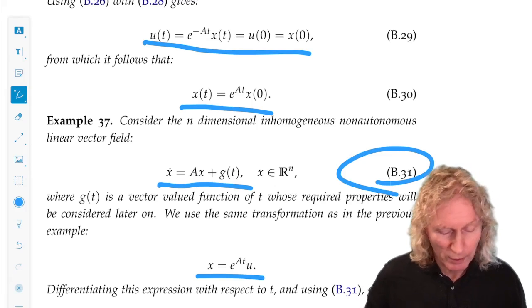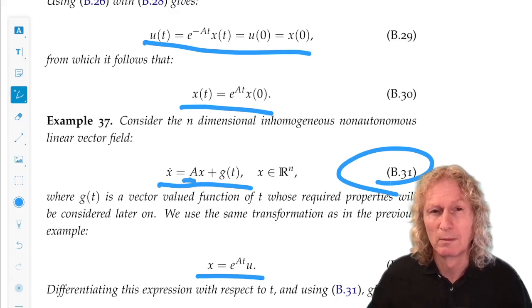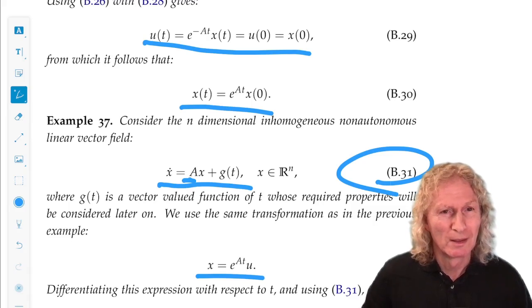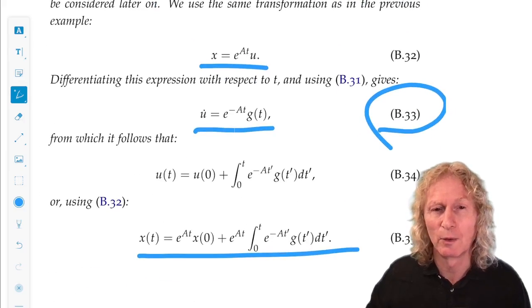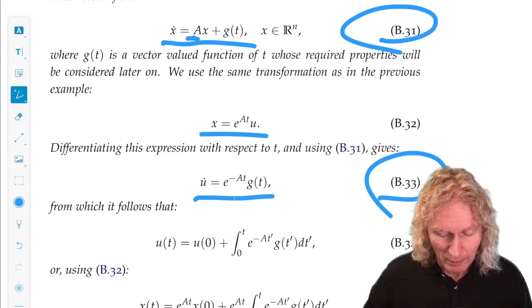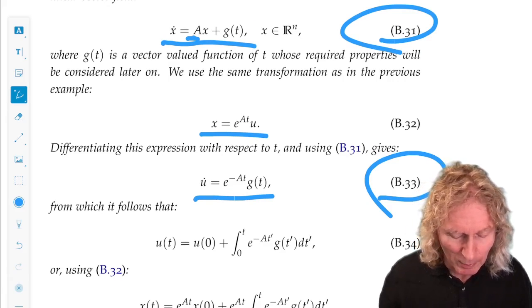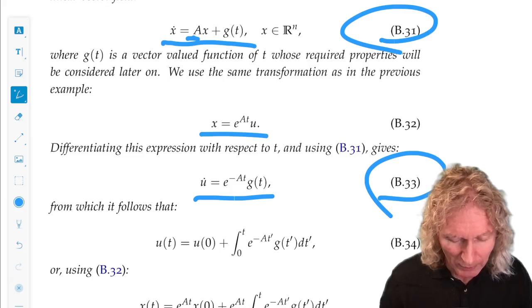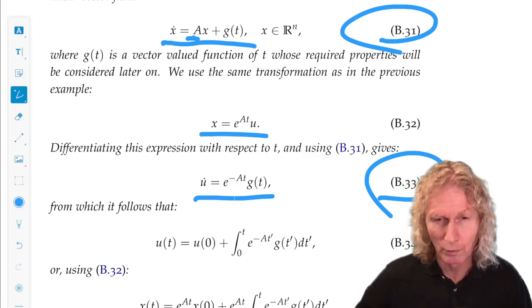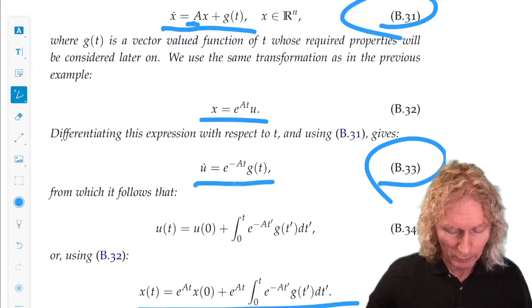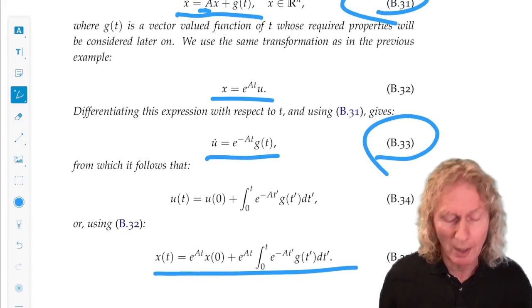Okay, now in one dimension, we let A could be time-dependent. It doesn't work for an n-by-n system, and you can try it if you want. There are a lot of things people do trying to get this to work, because in applications there are many applications where X dot is A of T times X plus G of T. It's a very general form for an equation. If you follow my quantum mechanics course, you'll see it in there. But this is where we stop here.